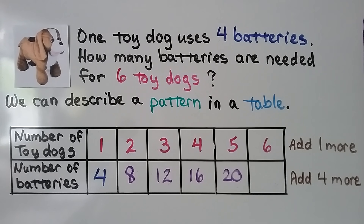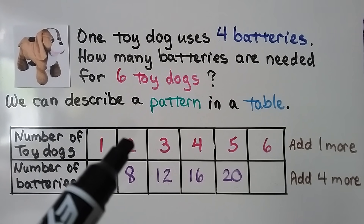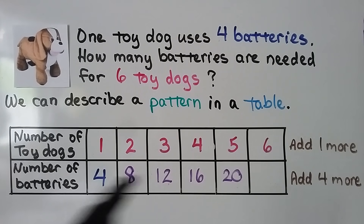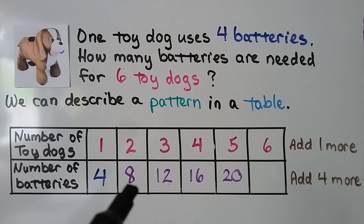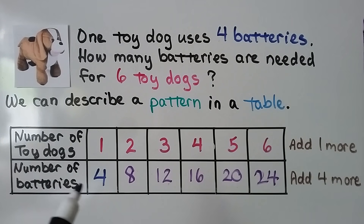1 toy dog uses 4 batteries. How many batteries are needed for 6 toy dogs? We can describe a pattern in a table — here's the number of toy dogs and the number of batteries needed. It told us that 1 toy dog uses 4 batteries, so 2 toy dogs need 8 batteries. For the rows, we add 1 more each time: 1, 2, 3, 4, 5, 6. For batteries, we add 4 more each time: 4 plus 4 is 8, 8 plus 4 is 12, 12 plus 4 is 16, 16 plus 4 is 20, and 20 plus 4 is 24. This is skip counting by 4s — adding 4 more to each number.